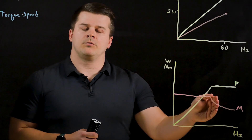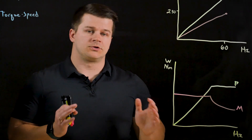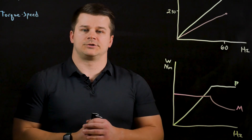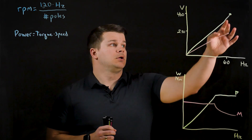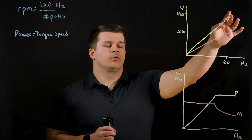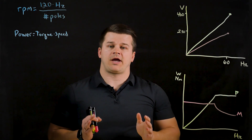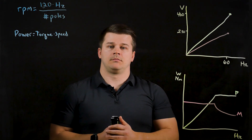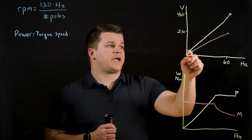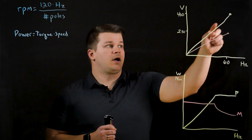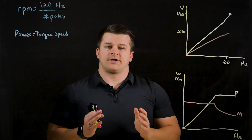Beyond the rated frequency is the field weakening range where the torque drops off and the motor characteristics change. With a traditional line-fed motor you're outputting the rated frequency and voltage to achieve the rated torque at full speed. By utilizing a VFD you can choose any frequency on this line and achieve the rated torque of the motor at your desired speed.